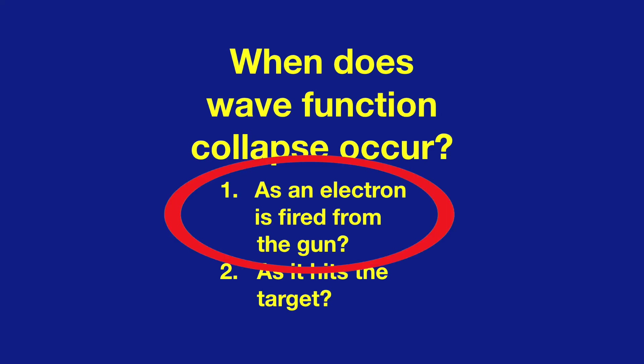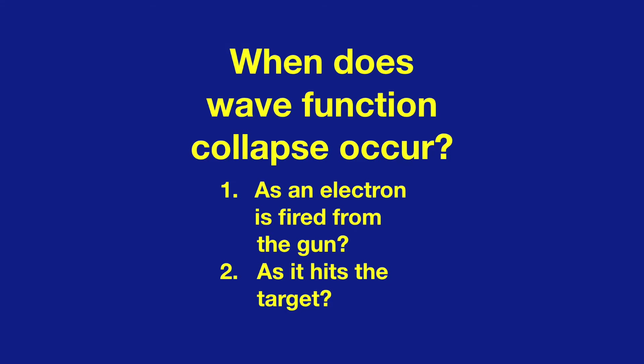In our model, wave function collapse occurs when an electron is fired. By the time the electron is fired, all the probabilistic effects have taken place. And after that, the electron simply follows a known trajectory, namely the trajectory of the wave backwards to the target screen.